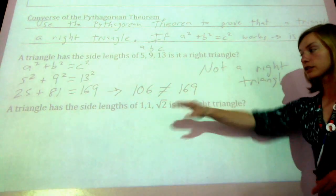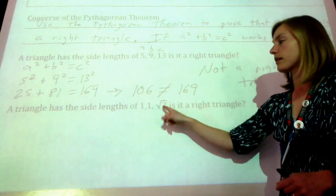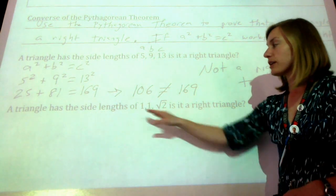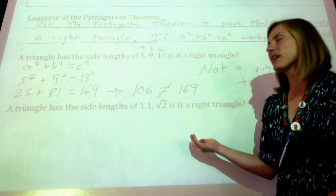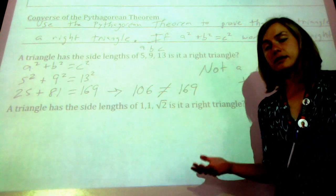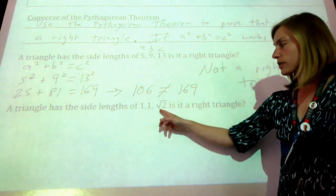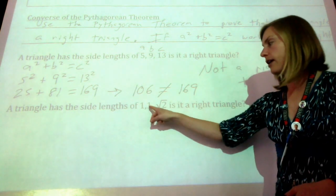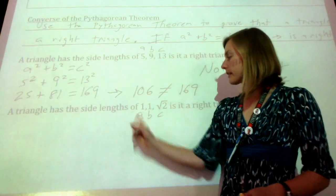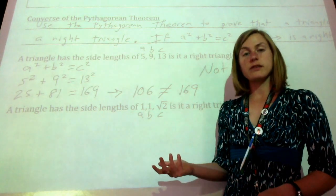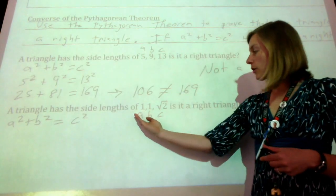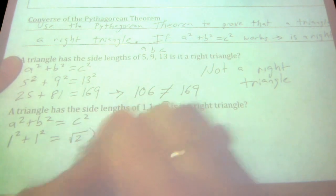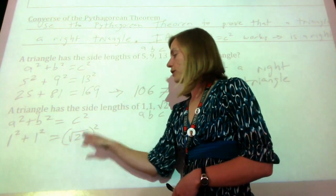Let's try now with side lengths of 1, 1, and square root of 2, because side lengths can be square roots. We need to decide which is a, b, and c. The square root of 2 is the longest of those three — it is longer than 1 — so it needs to be c. And since 1 and 1 are the same, it doesn't matter which is a or b. So a equals 1, b equals 1, c equals square root of 2. Let's write down the formula and plug in those values.